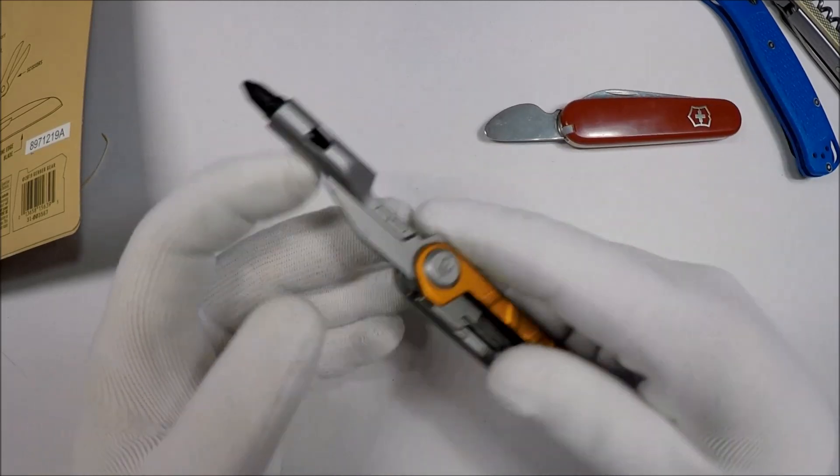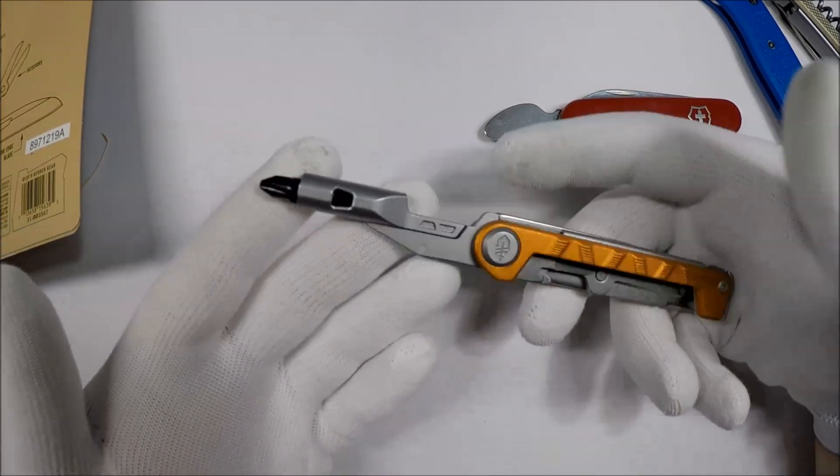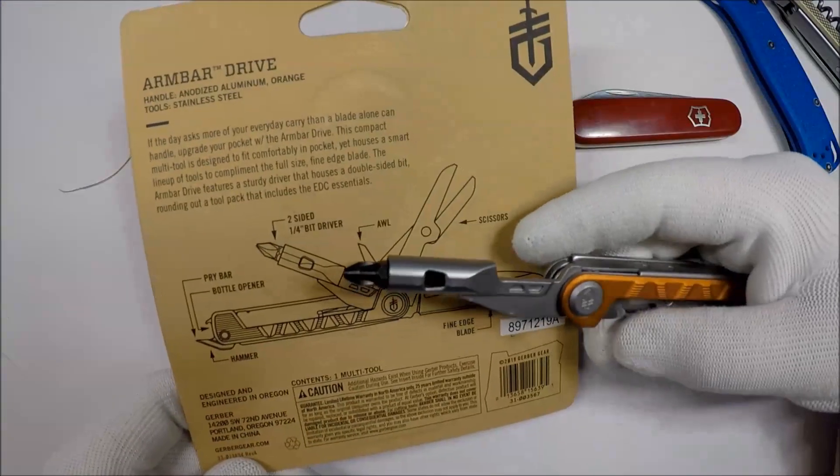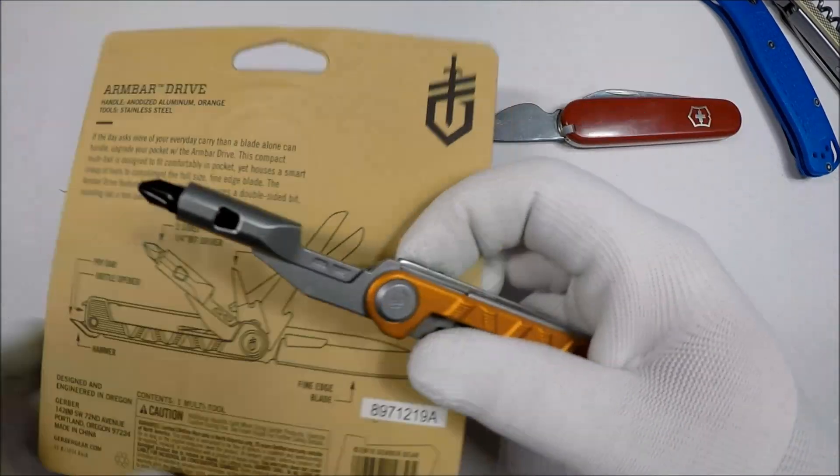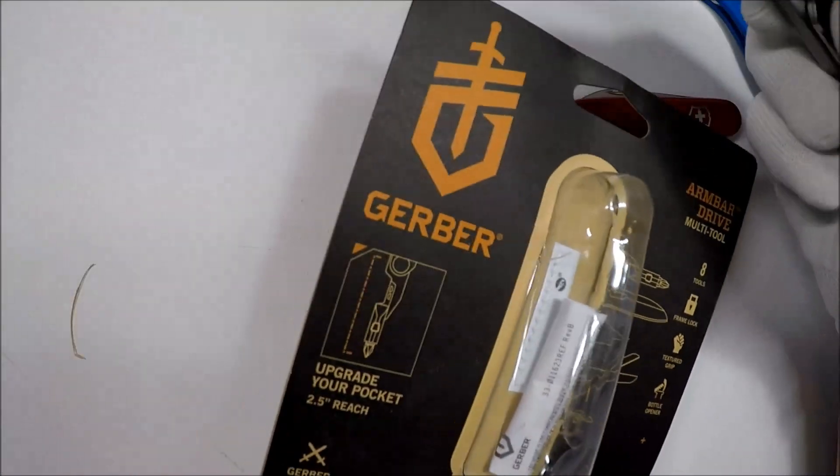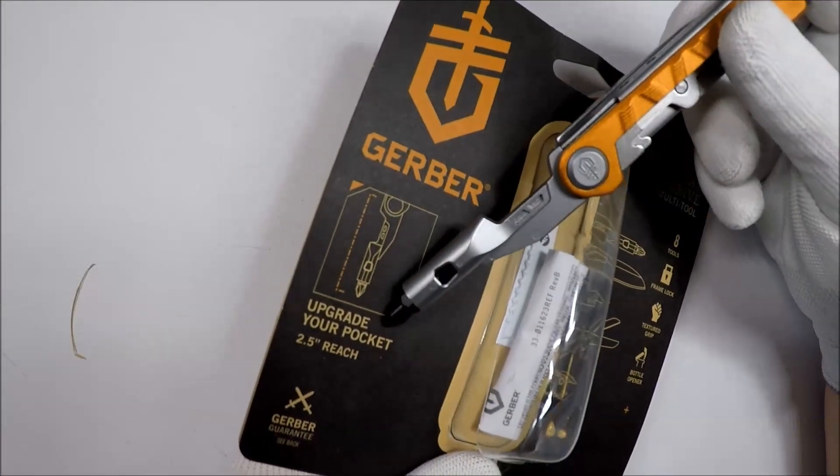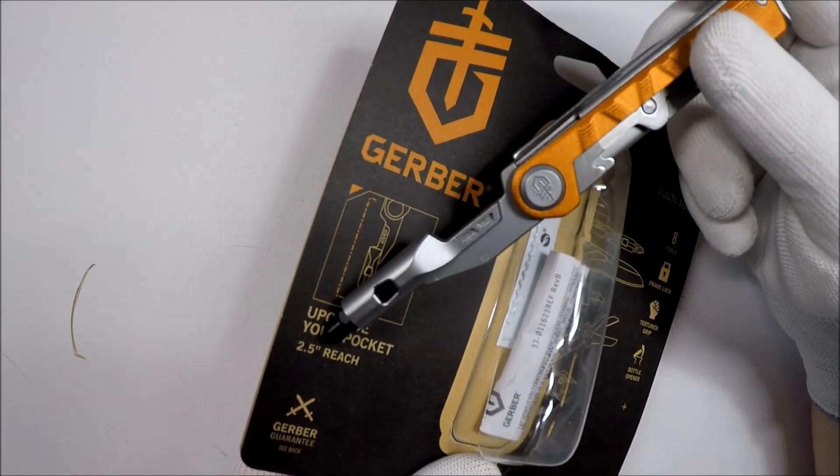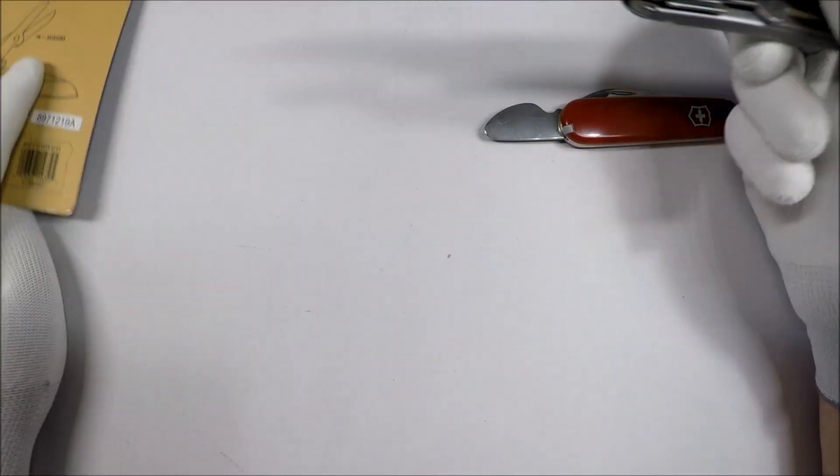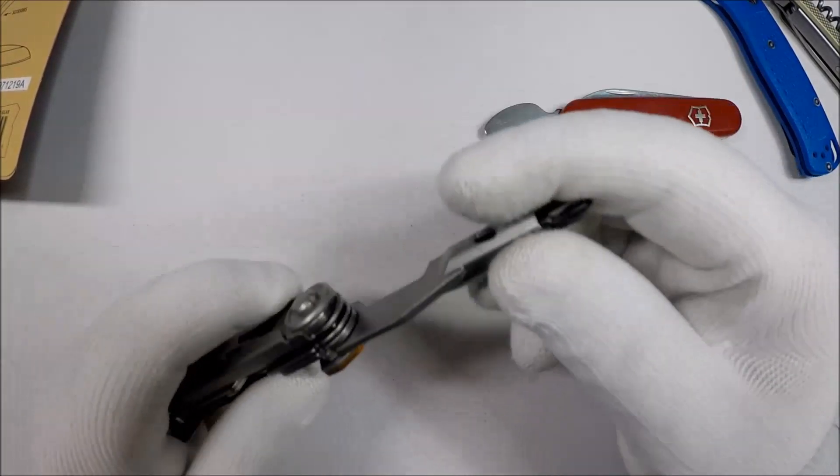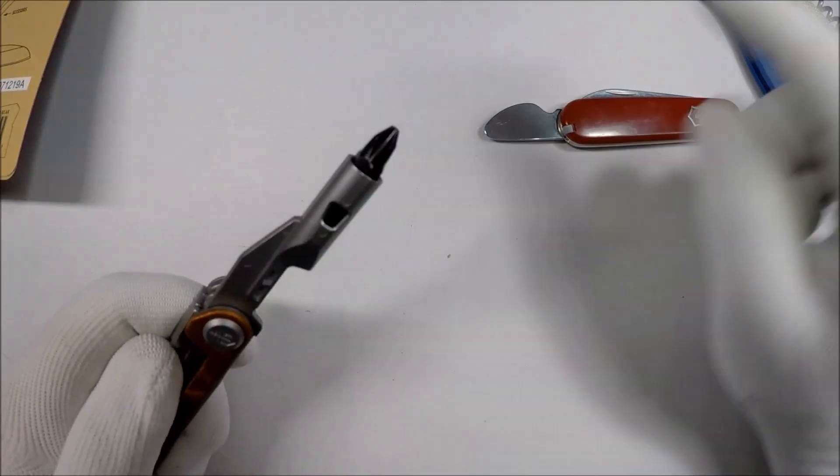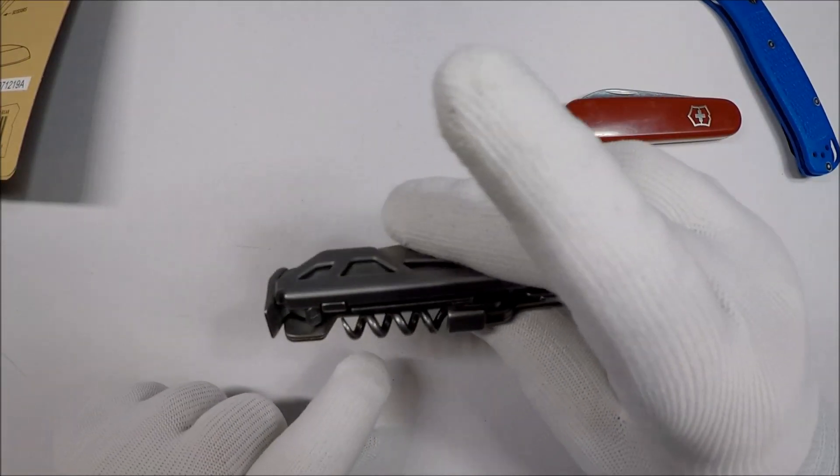I mean, it's not so bad. And it gives you a bit of length there for screwdrivering. As it says right here, upgrade your pocket with 2.5 inch reach. Alright, I like this. I think this is much more useful, at least for me, than the corkscrew.